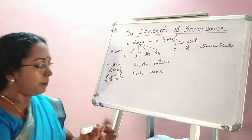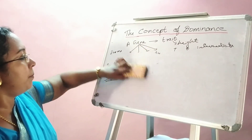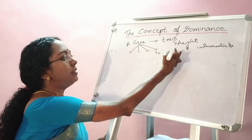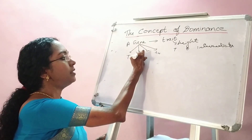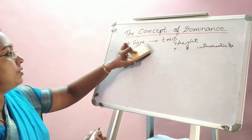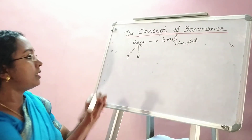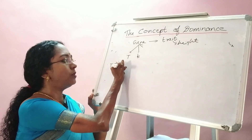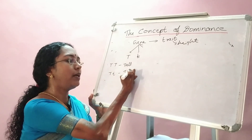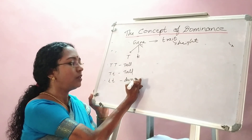Now coming back to Mendel's experiment. For the pea plant, when he took height as the trait, the gene had only two forms: capital T and small t. In some plants, both capital T occurred — TT — so the plant was tall. In others, capital T and small t occurred — Tt — and again the plant was tall. In yet other plants, small t and small t — tt — and the plant was dwarf.